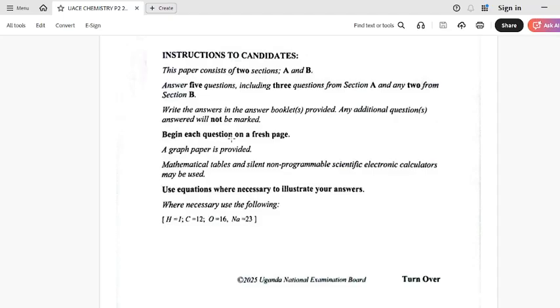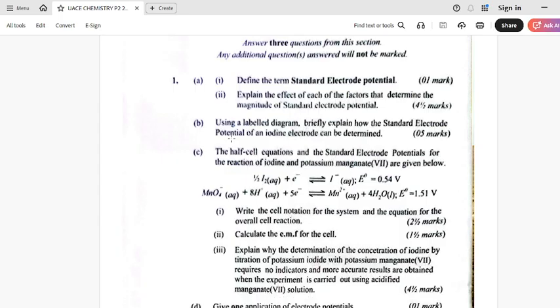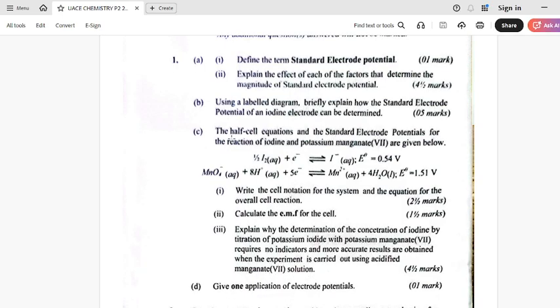So that's how they have looked like. That is section A, let us learn very fast. Section A is covering 60 marks, and from this section you are required to answer three questions. Any additional questions answered will not be marked. So that is our number one. That's how number one has been looking like as far as this paper is concerned. Number one is about standard electrode potential.